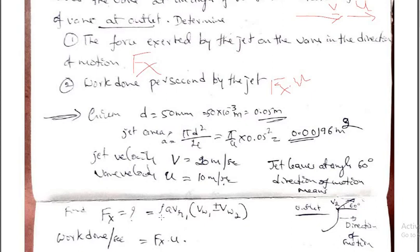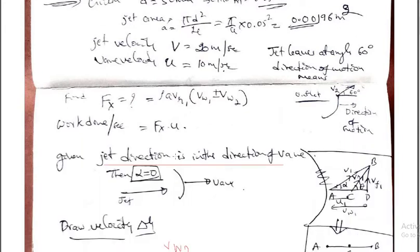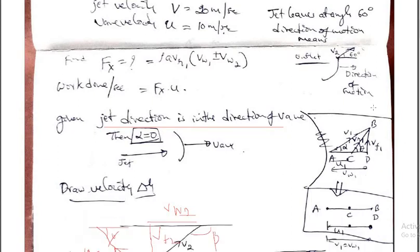What is Fx? Force is equal to rho A Vr1 into (Vw1 plus or minus Vw2). Work done equals Fx into U. Since the jet is acting in the direction of the moving vane, alpha equals 0. This is the velocity triangle at the inlet. Since alpha becomes 0, point B joins to D. So AB equals AD equals V1 equals Vw1. AC represents U1, and CB equals Vr1.